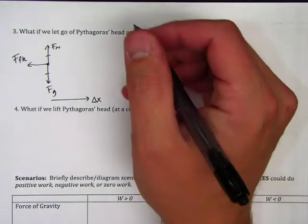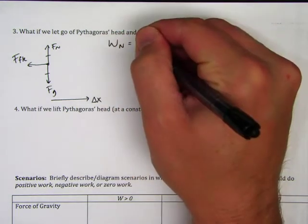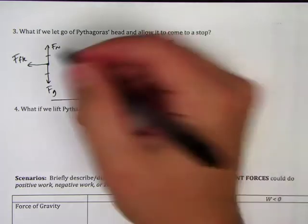Now, how do we figure out how much work is done? Well, just as before, the work done by normal and gravity is zero because they're perpendicular to the displacement.